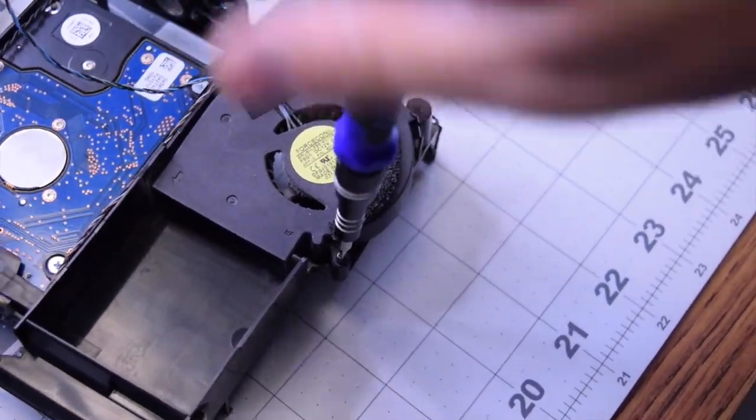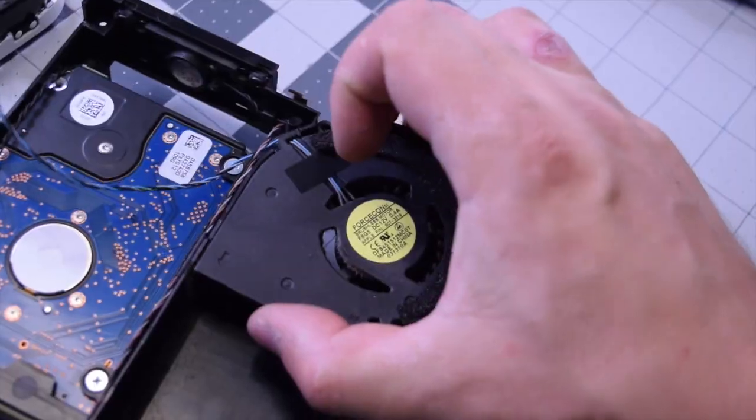The fan is screwed in with two Phillips head screws. Go ahead and remove those. You can just peel it right back. And that's it, it's out.